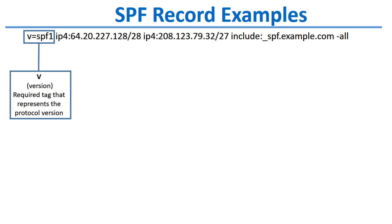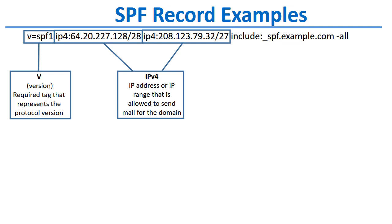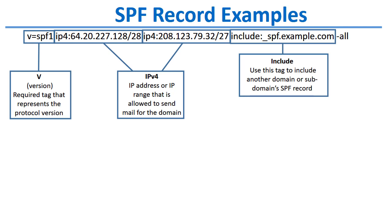The next element in an SPF record is an indication of what servers are allowed to send mail for the domain. You can have multiple entries — for example, this SPF record has two IP address ranges authorized to send mail, indicated by the slash notation at the end of the IP address. An SPF record may also contain an include tag, which includes all domain servers specified in another domain or subdomain's SPF record — for example, include:spf.example.com.